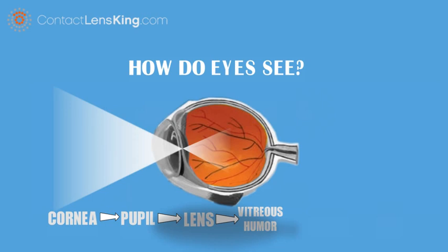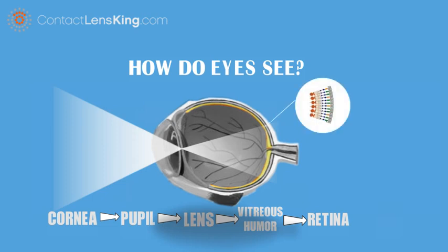Once it travels through this fluid, it reaches the retina, located at the back of the eye. The retina contains cells called photoreceptors, made up of rods, which are sensitive to black and white, and cones, that are sensitive to colors.